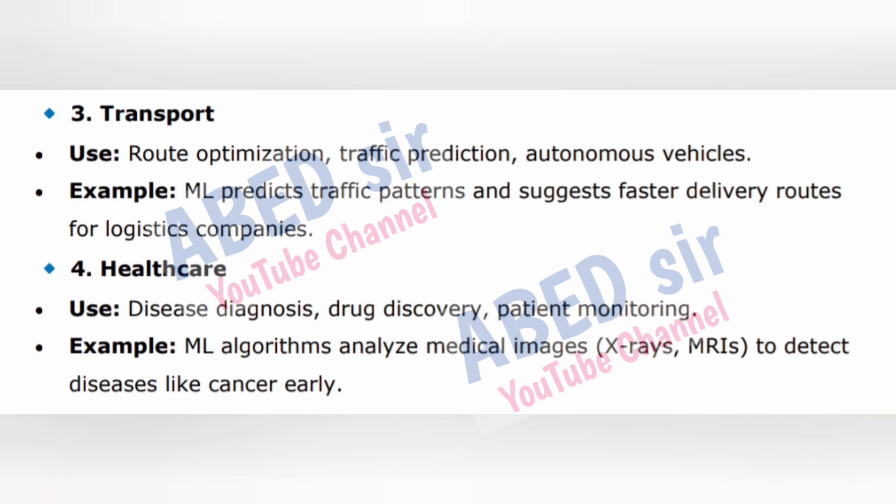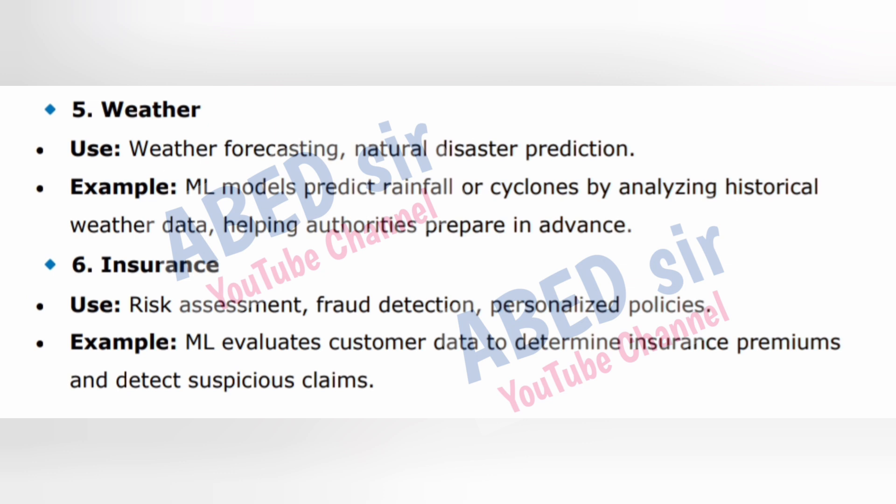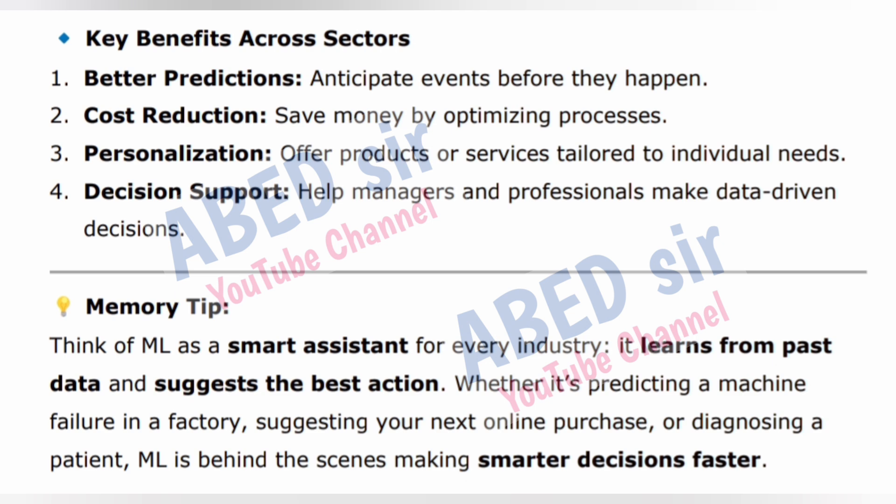Sector 4 — Healthcare: uses disease diagnosis, drug discovery, patient monitoring. Example: ML algorithms analyze medical images (X-rays, MRIs) to detect diseases like cancer early. Sector 5 — Weather: uses weather forecasting and natural disaster prediction. Example: ML models predict rainfall or cyclones by analyzing historical weather data, helping authorities prepare in advance. Sector 6 — Insurance: uses risk assessment, fraud detection, personalized policies. Example: ML evaluates customer data to determine insurance premiums and detect suspicious claims.